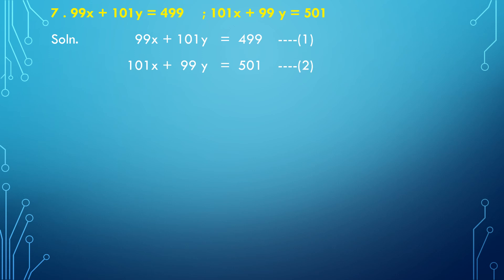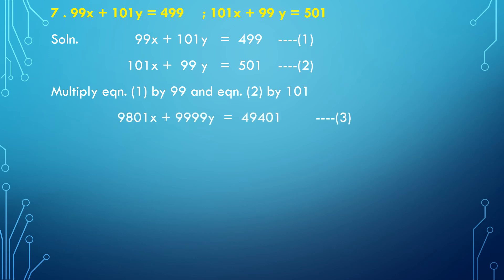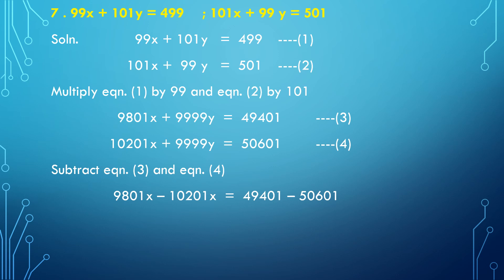We will make the coefficient of y equal. For this, we multiply equation number 1 by 99 and equation number 2 by 101. After multiplying, equation number 1 becomes 9801x plus 9999y equal to 49401 — equation number 3. Equation number 2 becomes 10201x plus 9999y equal to 50601 — equation number 4. Subtracting: 9801x minus 10201x, and 9999y minus 9999y gets cancelled, equals 49401 minus 50601, giving minus 400x equals minus 1200.